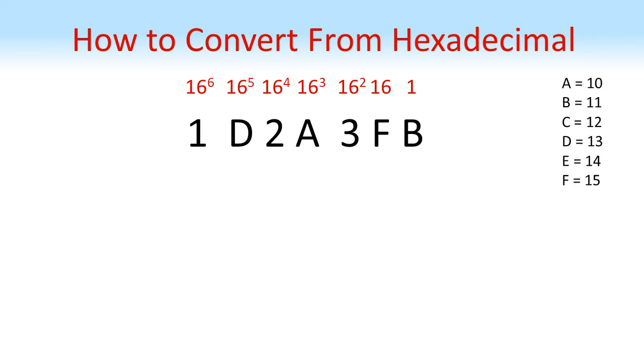We use these powers of 16 to convert to decimal. Take the hexadecimal number 1 d 2 a 3 f b, we can put the powers of 16 above in our columns and also remember that a represents 10, b represents 11 and so on up to f representing 15.